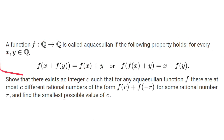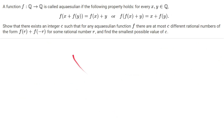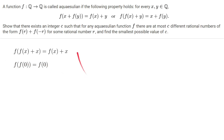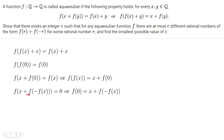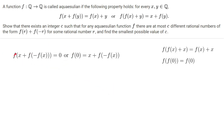We are going to try to find some properties about aquazillion functions first. If we replace y with x, then we get f(x) + f(x) = f(x+x), or f(f(x)+x) = x + f(x). Therefore, f(f(x)+x) = f(x+x). If we substitute x = 0, then we get f(f(0)) = f(0). We could also substitute y = 0, but that doesn't seem very helpful. Another thing we could do is force things to cancel out. If we substitute y = -f(x), then we get f(x) + f(-f(x)) = 0, or f(0) = x + f(-f(x)) - f(x).